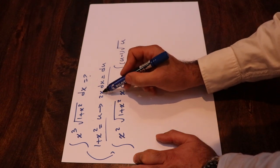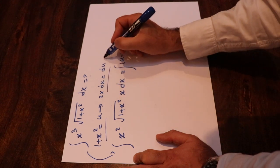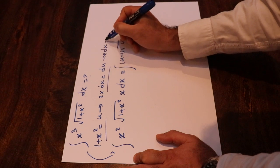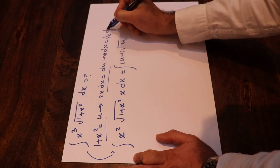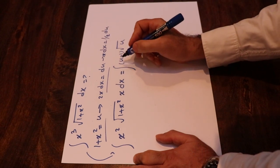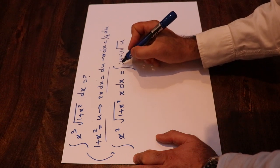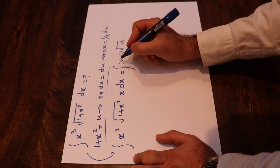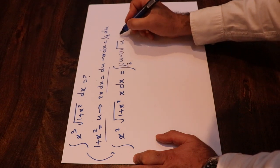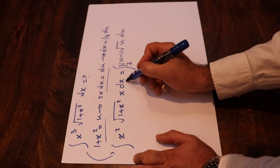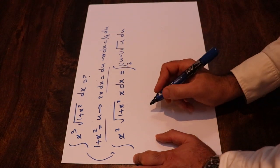And here you see x dx will be equal to 1 divided by 2 du. So here, all I need to do is to write basically (1/2) times du. Instead of x dx, I write (1/2) du.